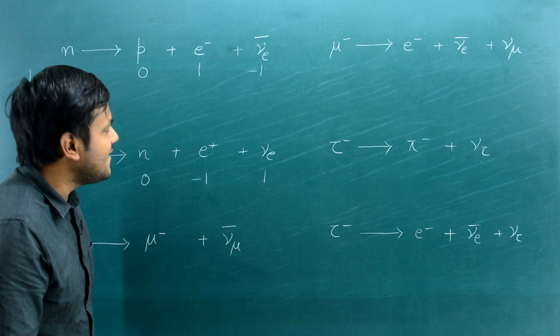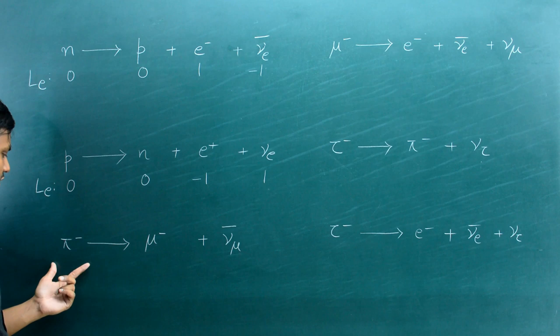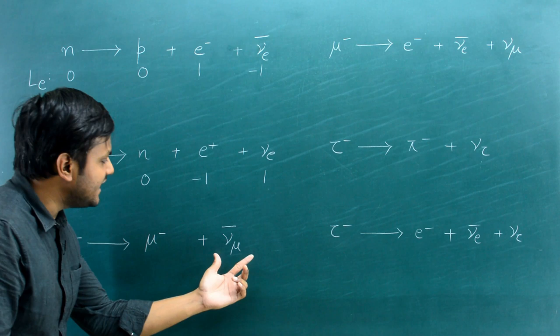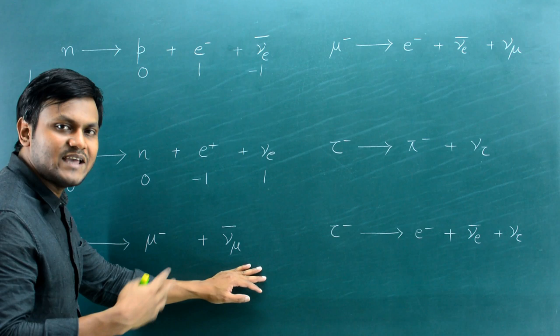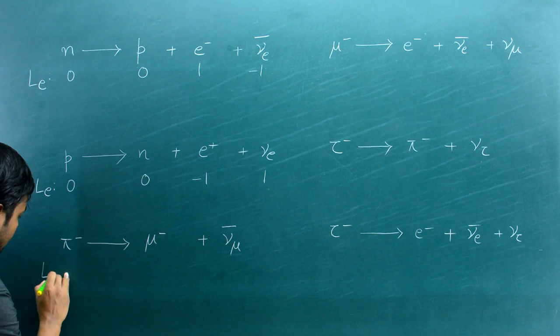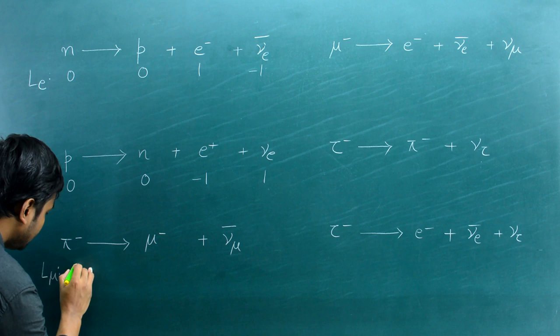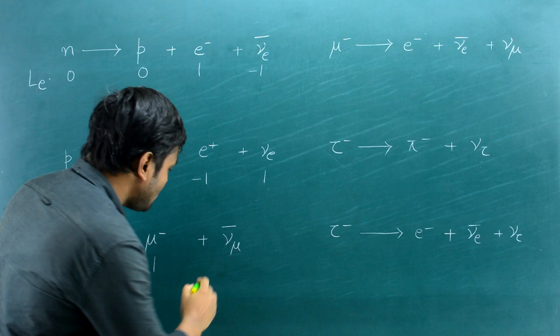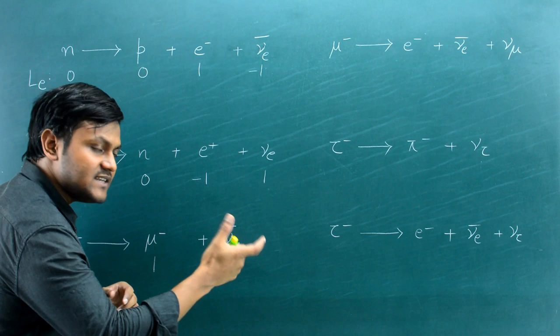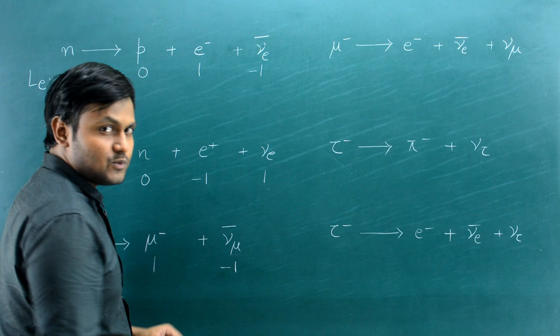Next is a pi meson decay: a free pi meson can decay into a muon particle and emit an anti-muon neutrino. This involves muons and muon neutrinos, so we look at the muon lepton number. The pi meson has muon number 0, the muon particle has +1, and the anti-muon neutrino has −1. Left-hand side: 0; right-hand side: 1 + (−1) = 0. The muon lepton number is conserved.